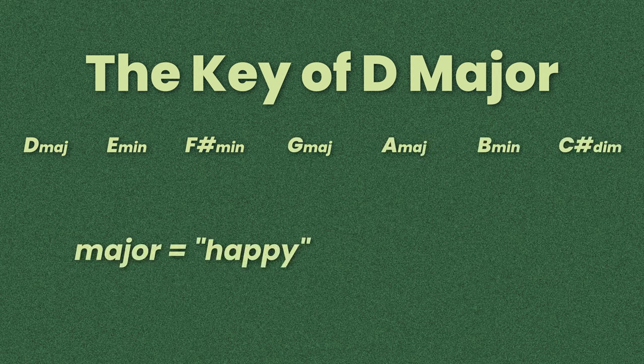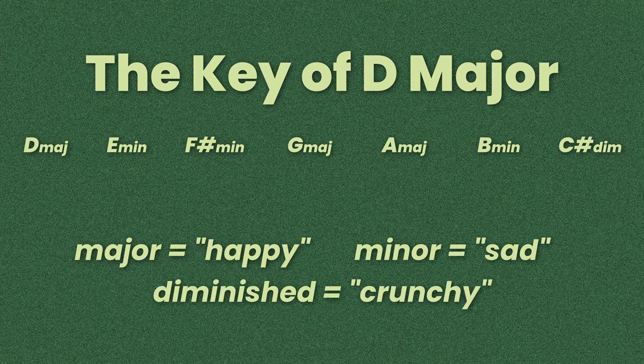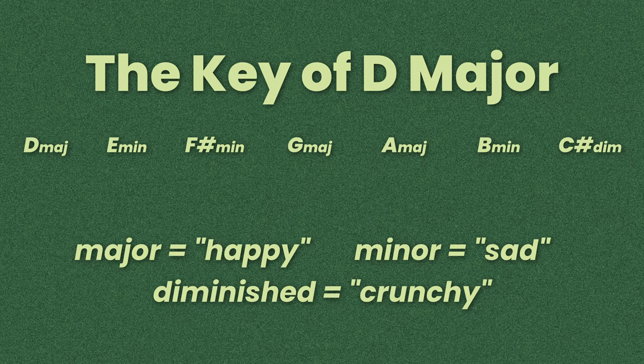Major chords sound happy, minor chords sound sad, and diminished chords sound crunchy. There are the exact same amount of major, minor, and diminished chords in every key. Each of these chords are referred to by a Roman numeral, one through seven.